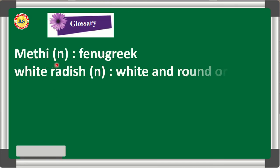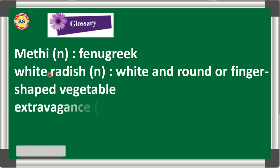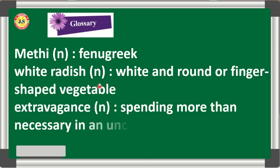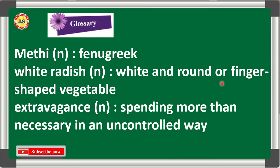The first glossary word is 'methi' — it is a noun which means fenugreek. 'White radish' is a noun which means a white and round or finger-shaped vegetable. 'Extravagance' is a noun which means spending more than necessary in an uncontrolled way, or spending more money on unnecessary items.